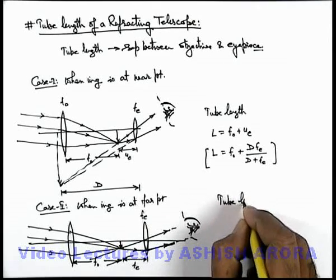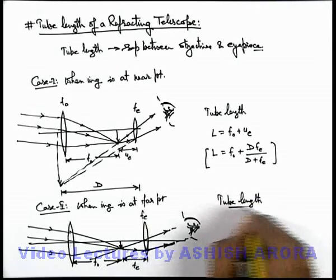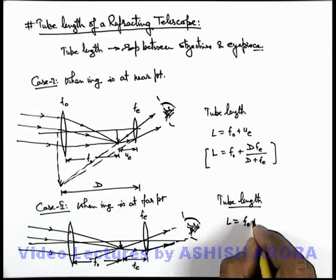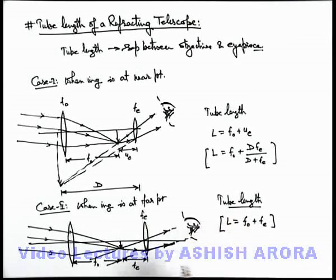Tube length in this state, when eye is looking at the image in relaxed state, can be directly given as f_o plus f_e. That will be the tube length for final image to be produced at far point.